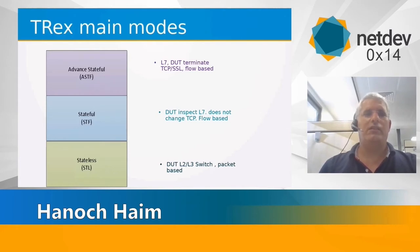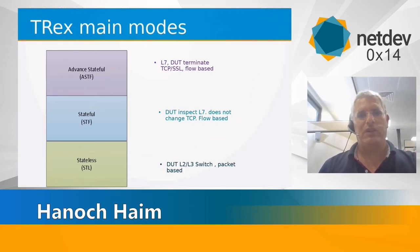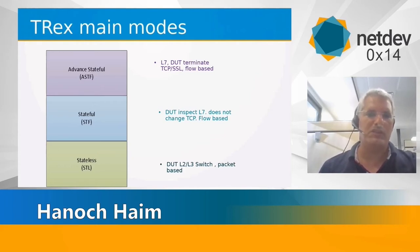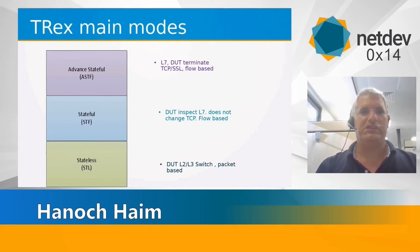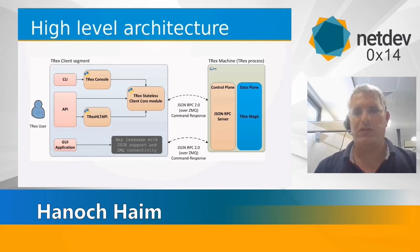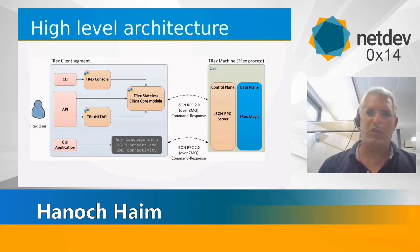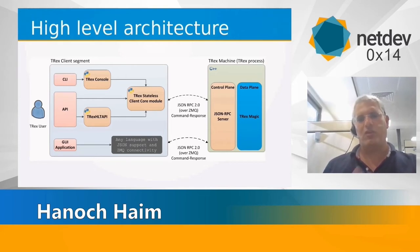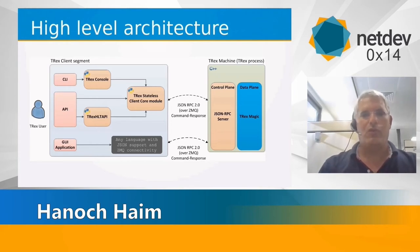This slide shows the main modes. There is stateful (ASTF) and stateless. Stateless is for switches or routers at layer 2 and layer 3, and advanced stateful is for smart features. The high-level architecture is split into server and client. The server side receives JSON-RPC over ZeroMQ as request-response, there is an event bus for messages to the cores, the cores talk to DPDK and send traffic, and there is a compiler.